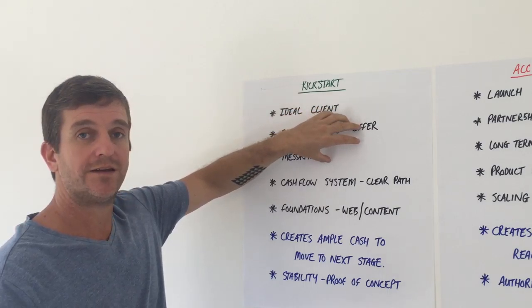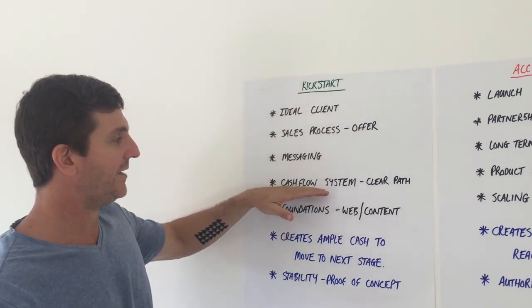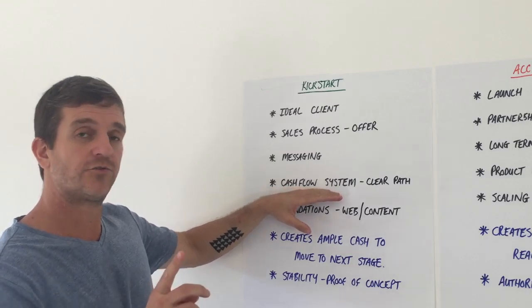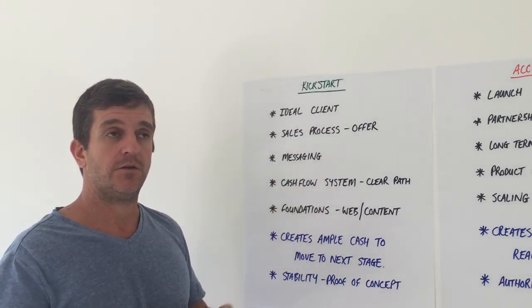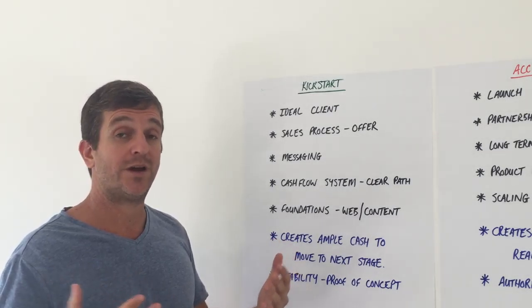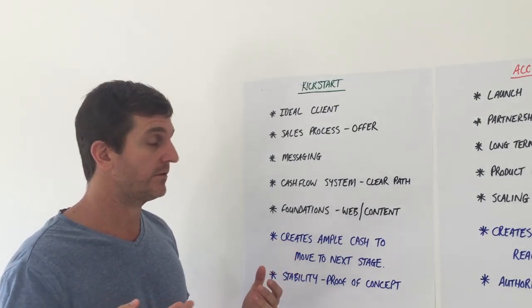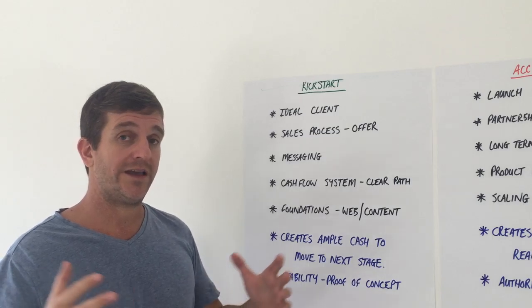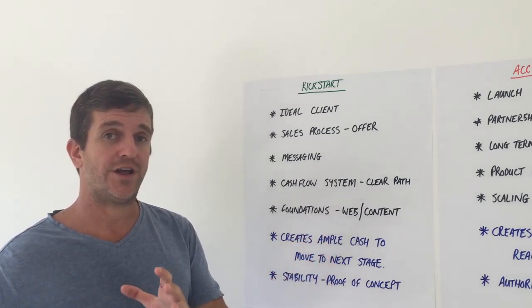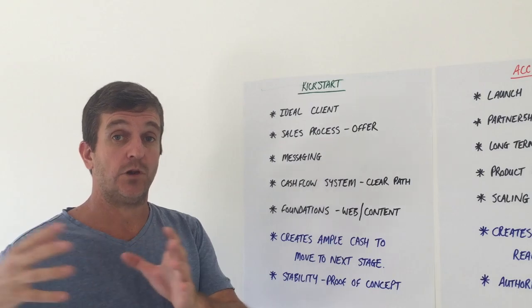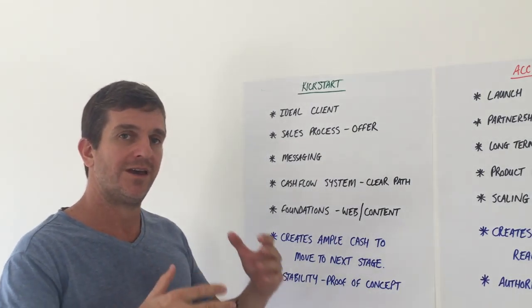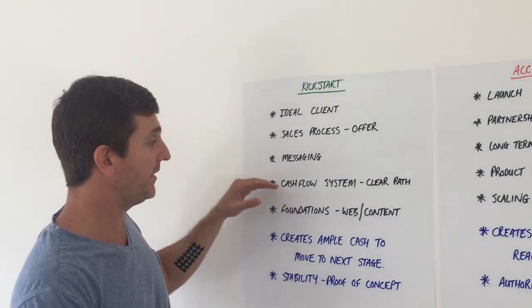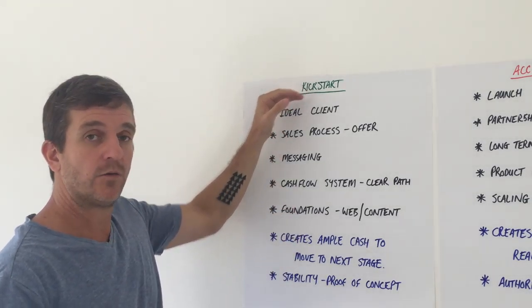From there we implement one true cash flow system. It may be one of three funnels - there's a high-end sales funnel, there's the product launch formula launch model, and then there's an automated model that I also use. So either one of those three funnels, and it really depends on where they're at, what sort of numbers they're looking to earn on a monthly basis.